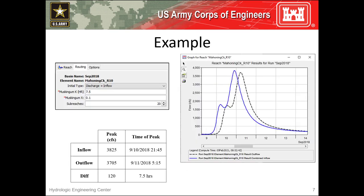This method requires an initial condition and three parameters: k, x, and number of sub-reaches. k, x, and number of sub-reaches are constant throughout time, so this method cannot simulate variable translation and attenuation. This example shows how an inflow hydrograph shown in blue is translated and attenuated to produce the outflow hydrograph shown in black.